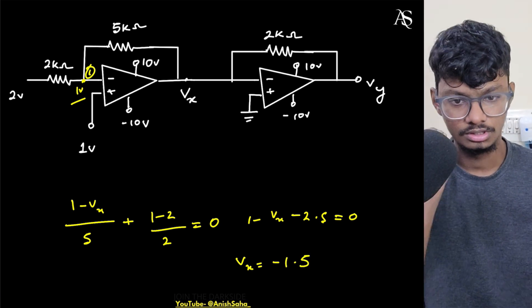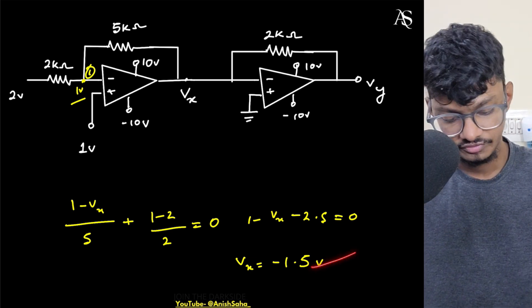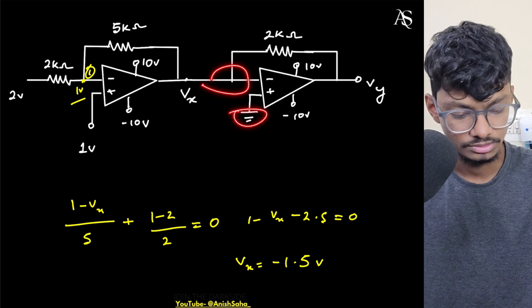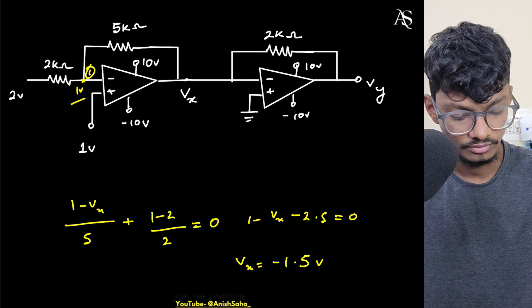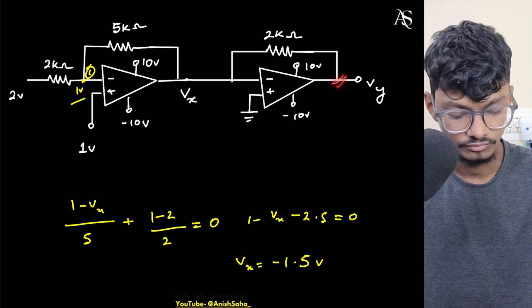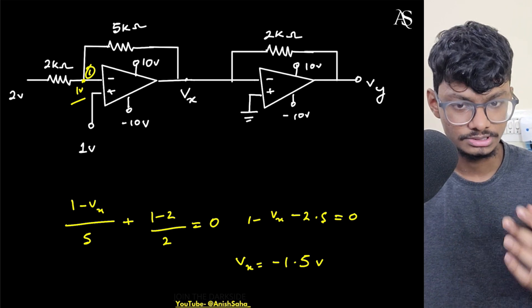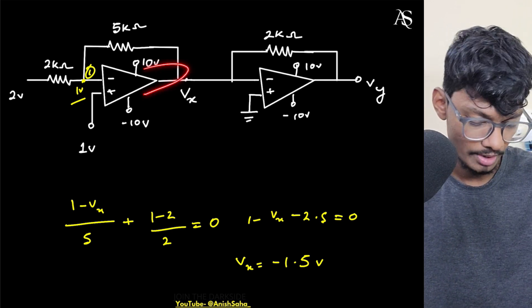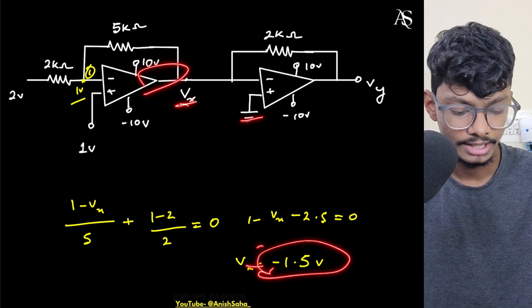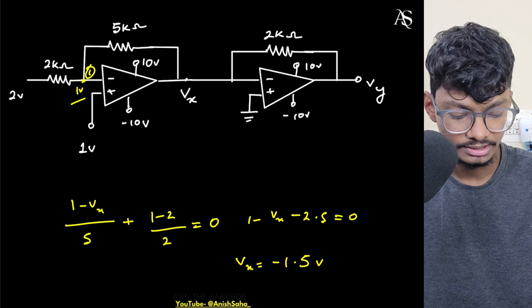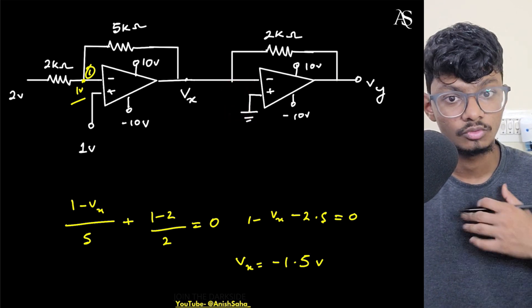So Vx is minus 1.5 volts. What about Vy? If I proceed here further, there is also ground, so this will be also ground. So if this is ground, so your Vy will be what? Vy will be, I don't know. Now the problem here is what is the problem? The problem here is this op amp is telling that this Vx node potential will be in minus 1.5 volts, and this op amp is telling that I am trying to apply virtual ground concept, so this will be in zero volts. So whom should I listen to now?